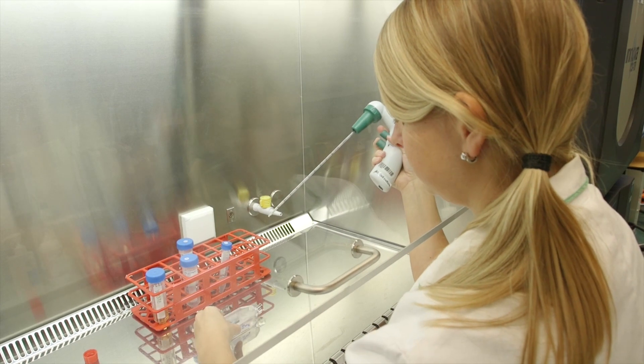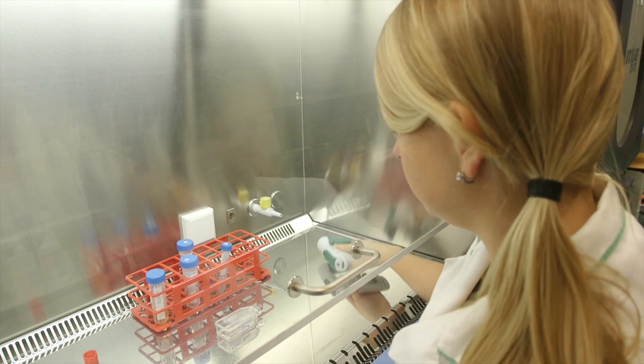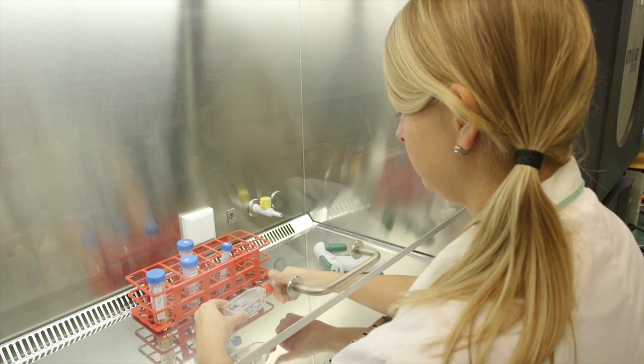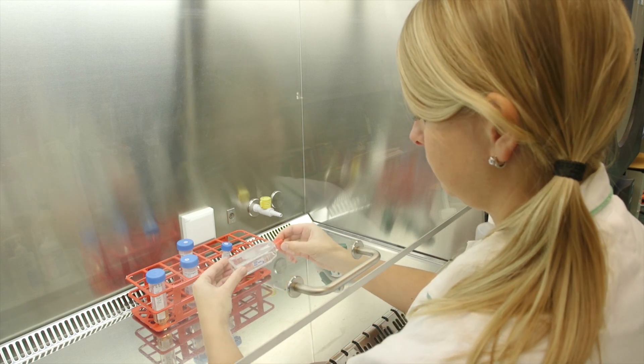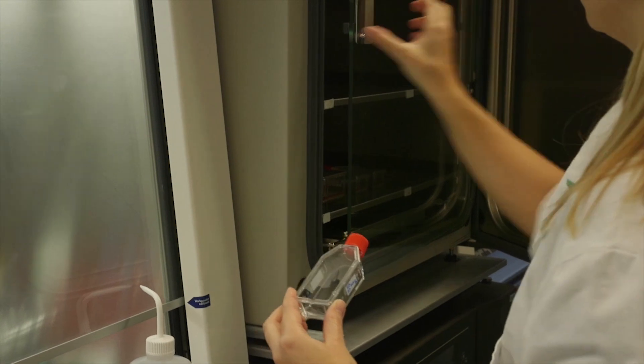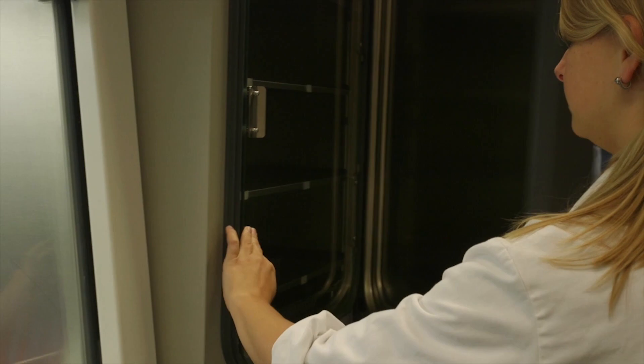After washing and removing the PBS for the second time, you can add the trypsin to the cells. Add 1 ml of trypsin. Close the lid on the flask and ensure the trypsin is distributed evenly over the cells. Then place the flask in the incubator. Trypsin is an enzyme which performs best at 37 degrees Celsius.